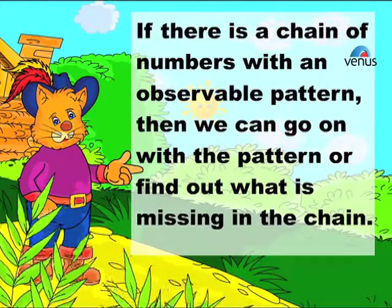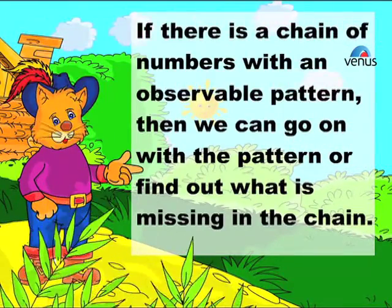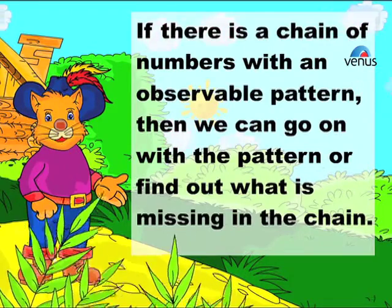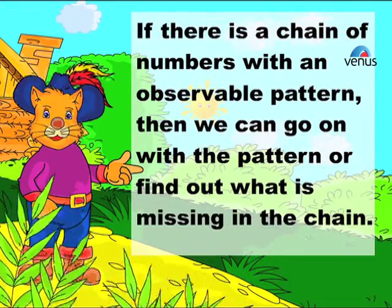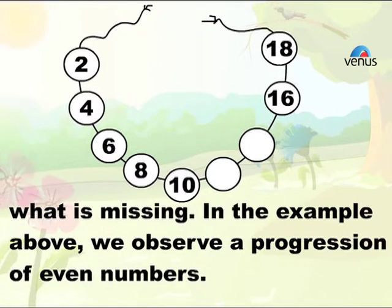Example one: If there is a chain of numbers with an observable pattern, then we can go on with the pattern or find out what is missing in the chain. Suppose we have 2, 4, 6, 8, 10, 16, 18. We can, by observing the pattern, find out what is missing.